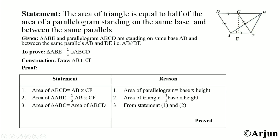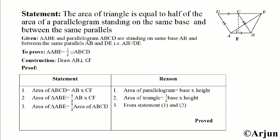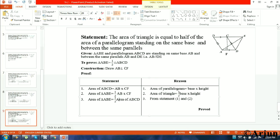In statement three, we can write: area of triangle ABE equals one-half area of ABCD. Here, area of ABE equals one-half times AB × CF, and AB × CF equals area of ABCD from statements one and two. In this way we can prove our theorem. Thank you for watching.